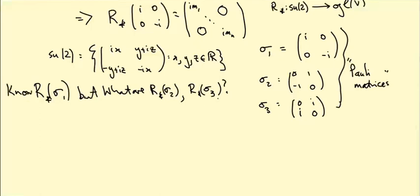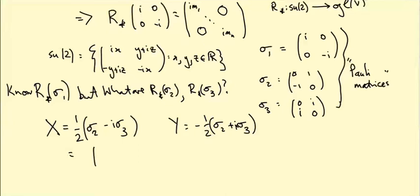It turns out that it's much easier to answer the following question. So instead of using these matrices, we're going to use X, which is a half σ₂ minus i σ₃, and Y, which is minus a half σ₂ plus i σ₃. So if you figure out what this means, it turns out to be X = (0, 1, 0, 0) and Y turns out to be (0, 0, 1, 0).